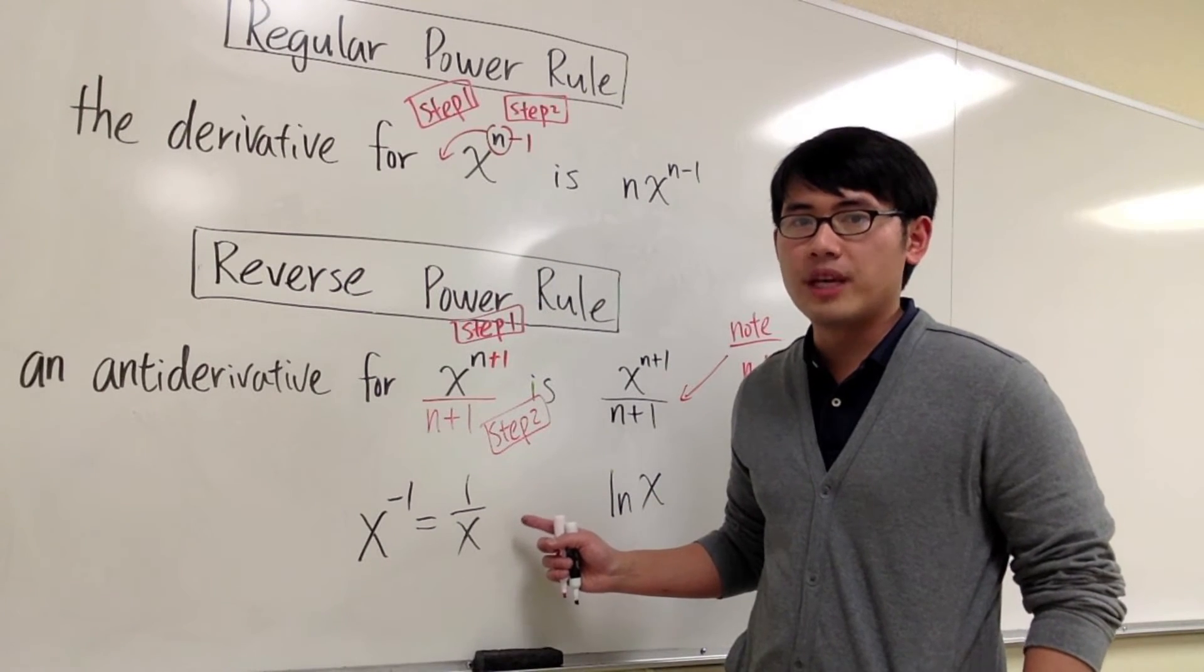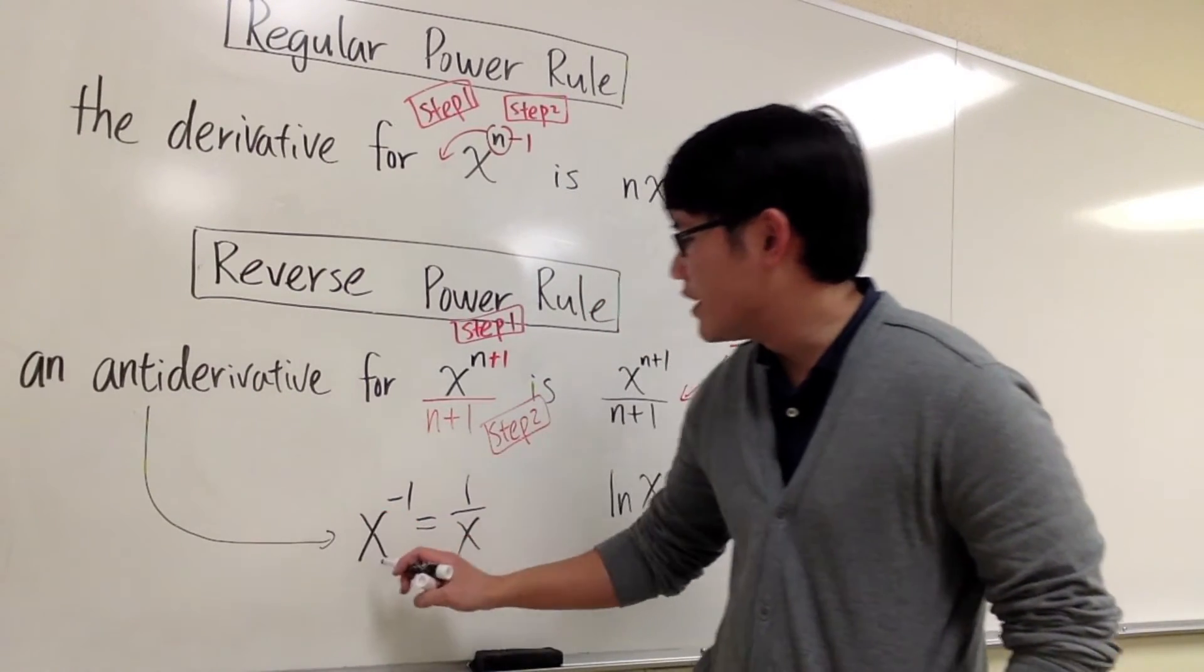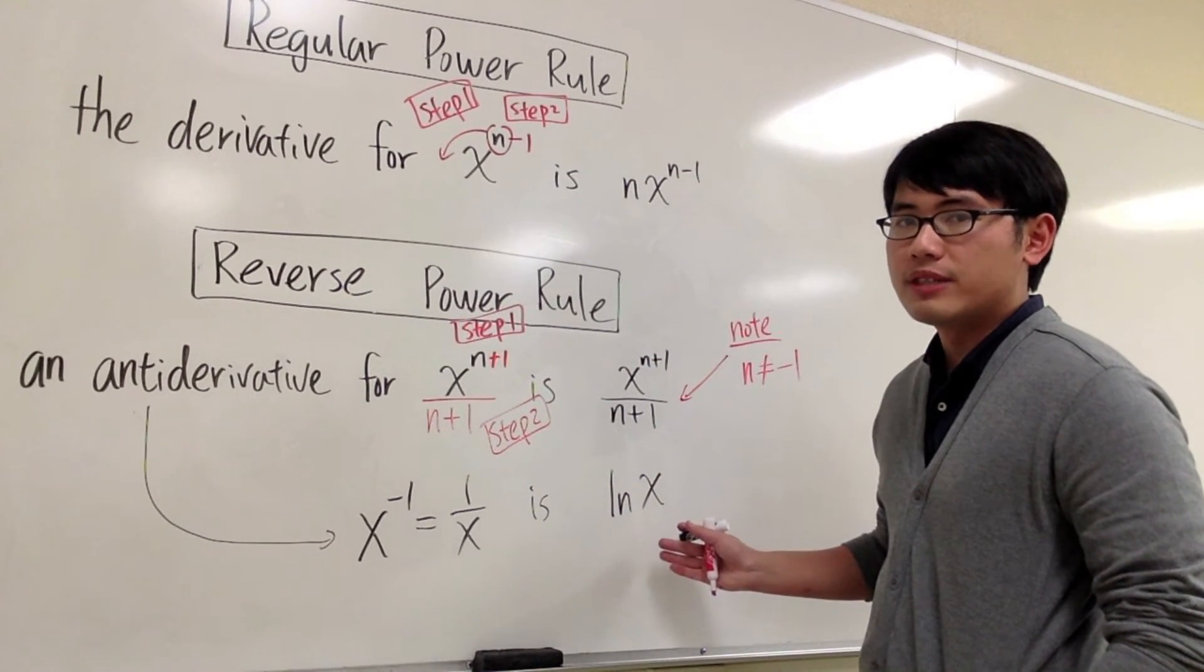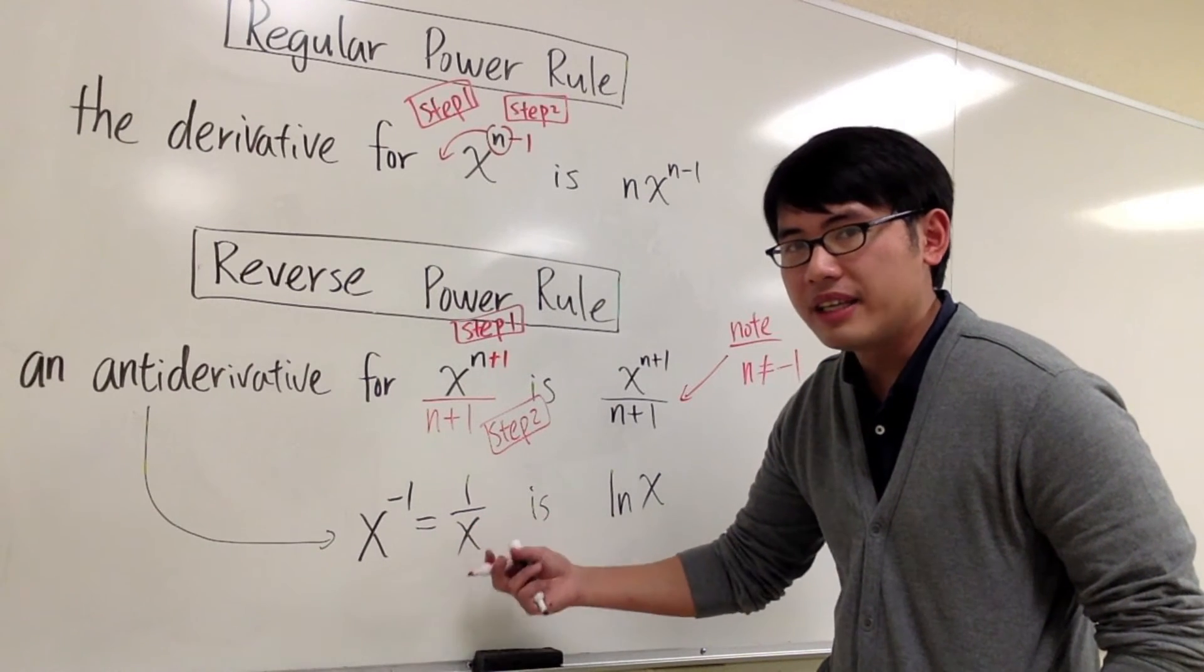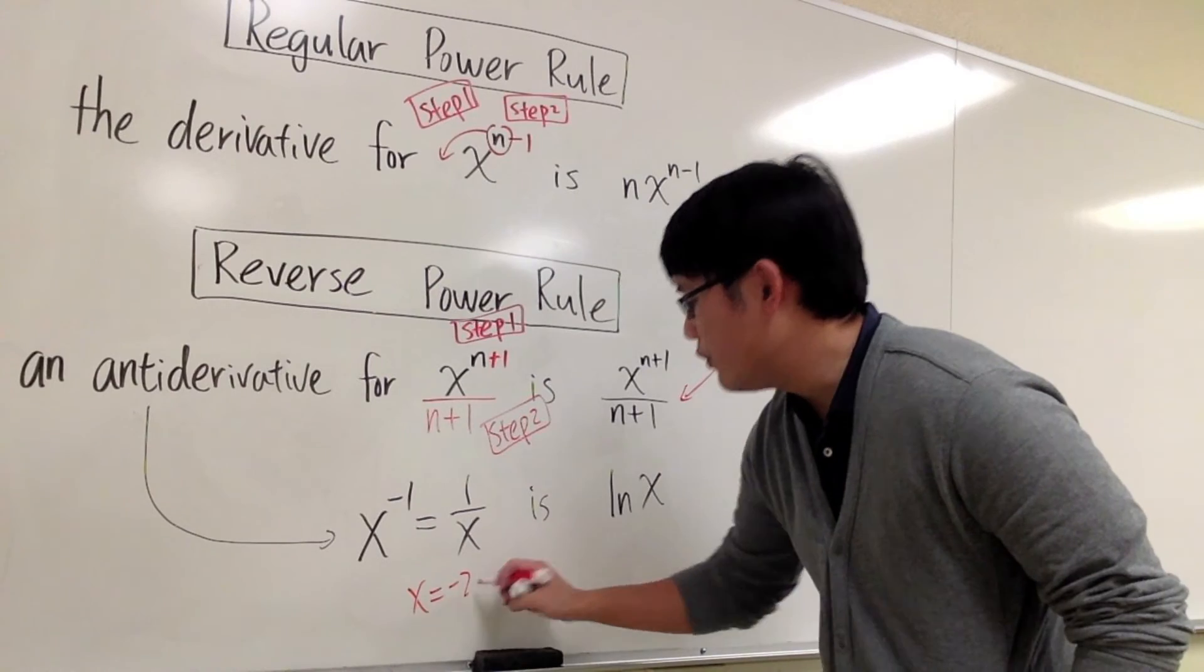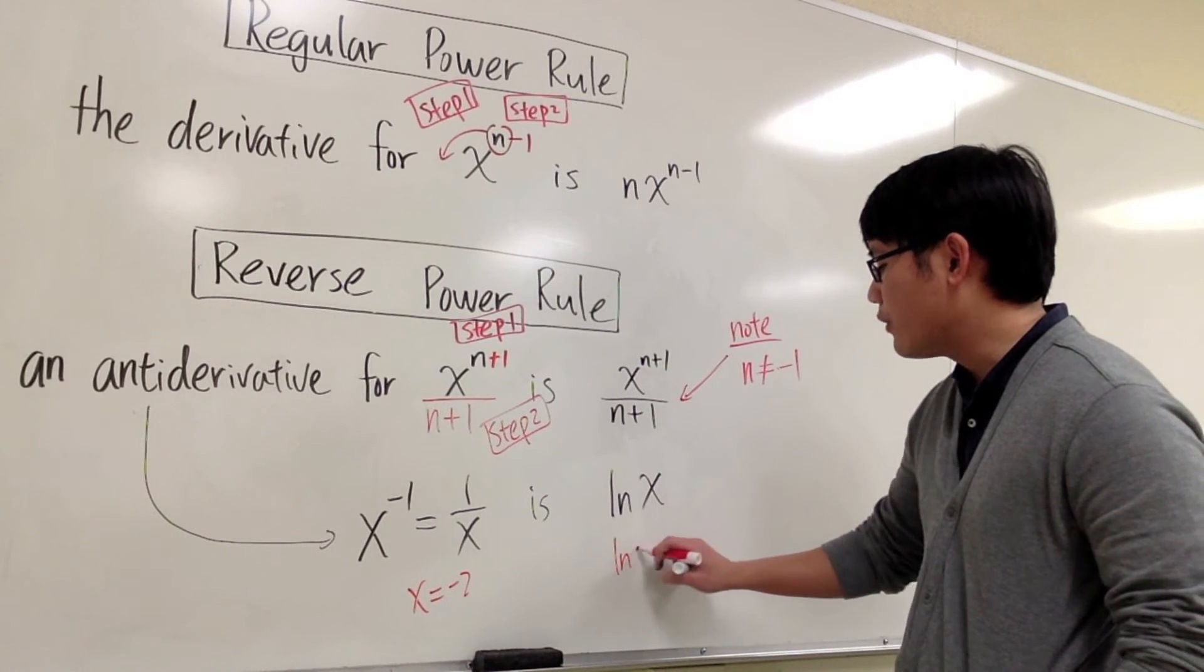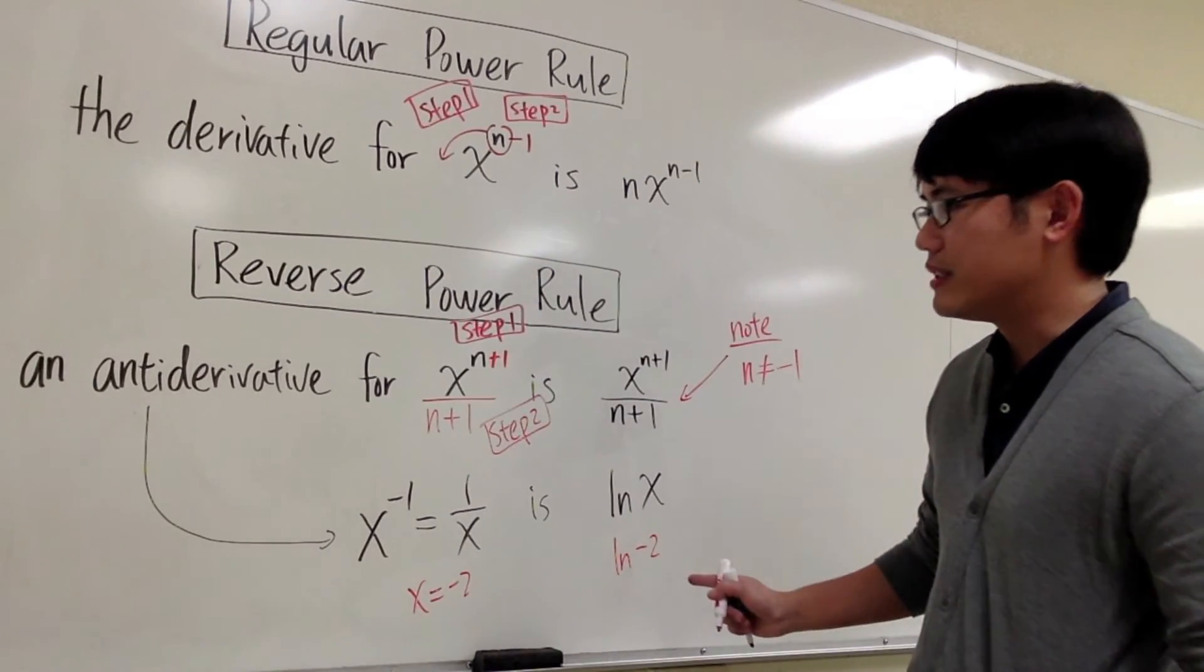Here's another technical detail that we have to be careful about. Because when we're trying to say an anti-derivative for 1 over x is ln x, we have to make sure that the x on both sides agree. For example, right here, I can plug in any negative value for x. I can plug in x equals negative 2, for example. We can totally do 1 over negative 2. But we are not allowed to have ln of negative 2, right? This isn't defined.